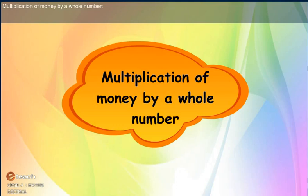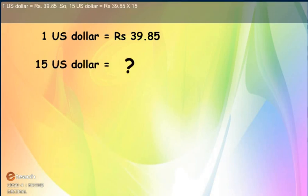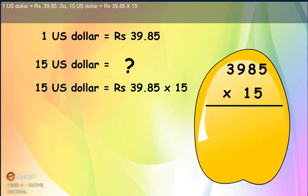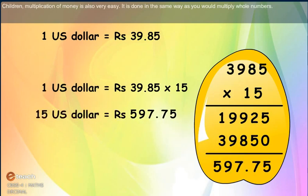Multiplication of Money by a Whole Number. The value of 1 US dollar keeps varying from time to time. If 1 US dollar equals Rs. 39.85, what is the cost of 15 US dollars? 15 US dollars equals Rs. 39.85 × 15. Multiply as you would multiply whole numbers. Multiplication of money is very easy — it is done the same way as whole number multiplication. However, you must not forget to put the decimal point after two digits from the right in the product.